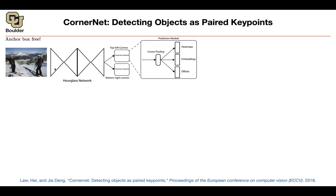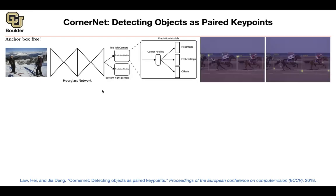The idea here is that you're going to treat the corners of your bounding boxes as keypoints — as if they are poses or keypoints of these objects. So we are turning the object detection problem into a pose estimation problem. That's why I was focusing on pose estimation, because those ideas can be generalized to actually do detection.